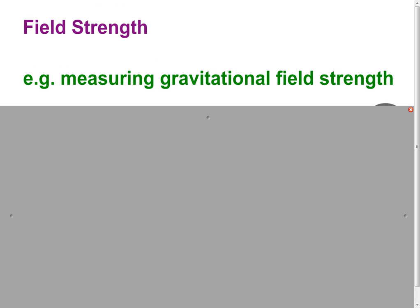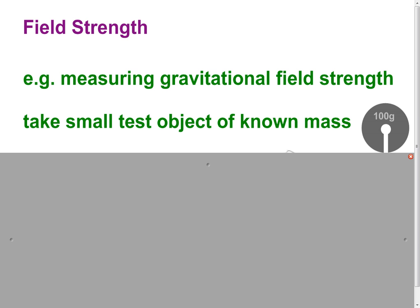So, well, let's have a look at this further then. If we wanted to measure gravitational field strength in this room, what could we do? Well, we could get a small test object of a known mass. So, this object here has a mass of 100 grams, which is 0.1 kilograms. Now, that mass is very small in comparison to the mass of the Earth, which is good.